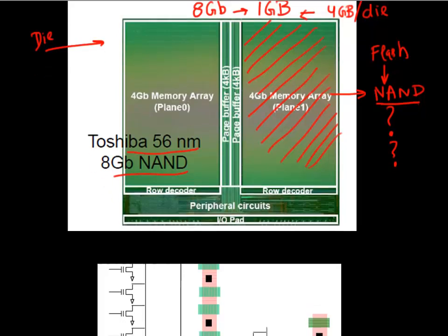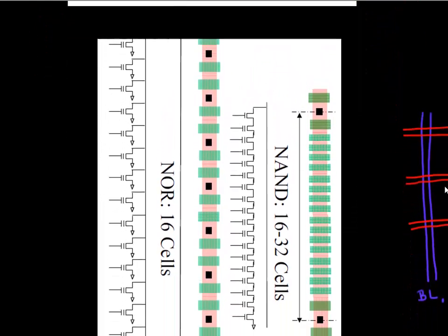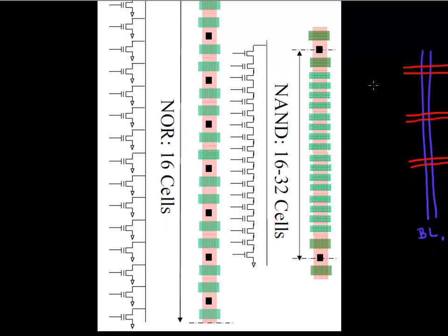So for any memory system, there are two ways you can arrange them. You can arrange them in a NOR fashion. So this is shown here as an array of 16 cells arranged in a NOR fashion. And on your right, shown here are the 16 cells or more cells arranged in a NAND fashion.